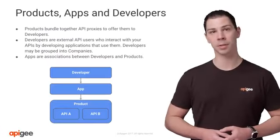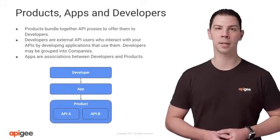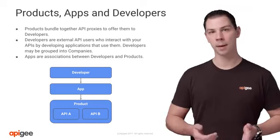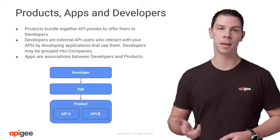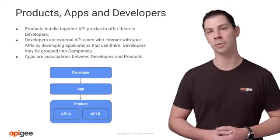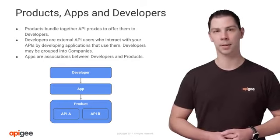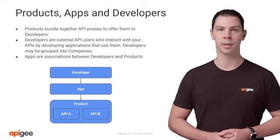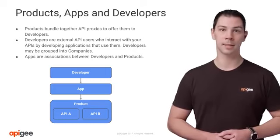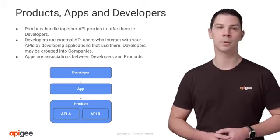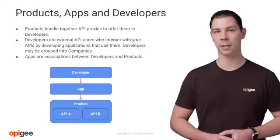An API product bundles resources, such as API proxies, in order to provide a specific level of access and functionality for client app developers. An API product typically specifies a list of API proxies, along with access limits, the API key approval method, and other configurations. API products are a key part of API management. Elements such as quota and other characteristics of the API behavior are defined as part of API products. API products allow delegation of API management to API product owners; changes to products can be implemented without the intervention of API engineers or operations.